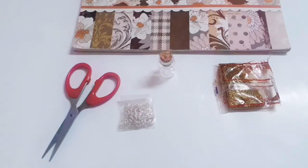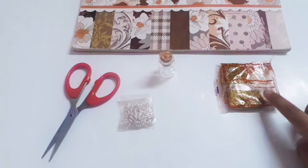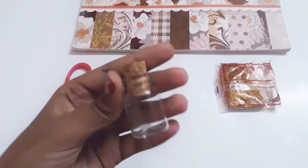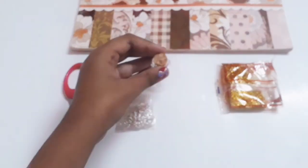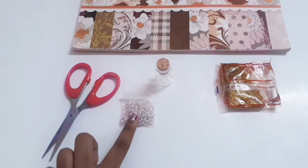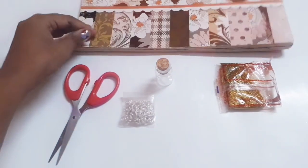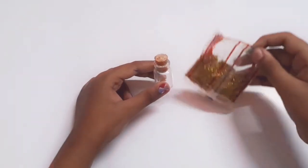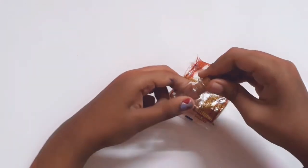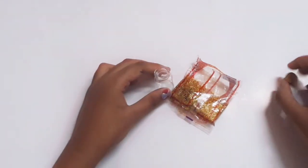For the first DIY, you'll need glitter, a cute miniature bottle, jump rings, scissors, and a paper pack. You can use whatever paper you want. First, I'm going to fill the bottle with some glitter.